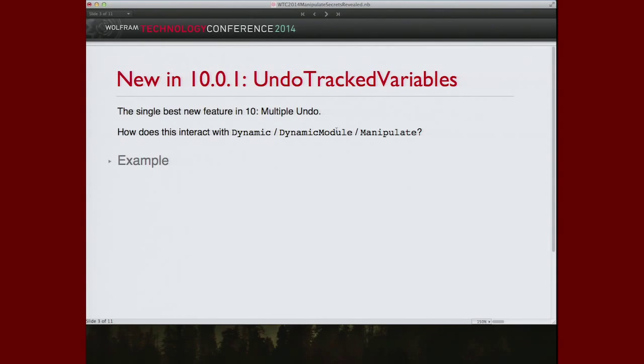So also new in 10. This didn't quite make it into the initial release of 10. But in 10.01, we have a new option that makes manipulate aware of the wonderful new multiple undo feature in the front end. Now typically you don't want or it's theoretically impossible to undo all kernel evaluations. But there are certain interface gestures that you can effectively undo by resetting local manipulate variables. And you specify which local manipulate variables you think you should care about undo through this new option.